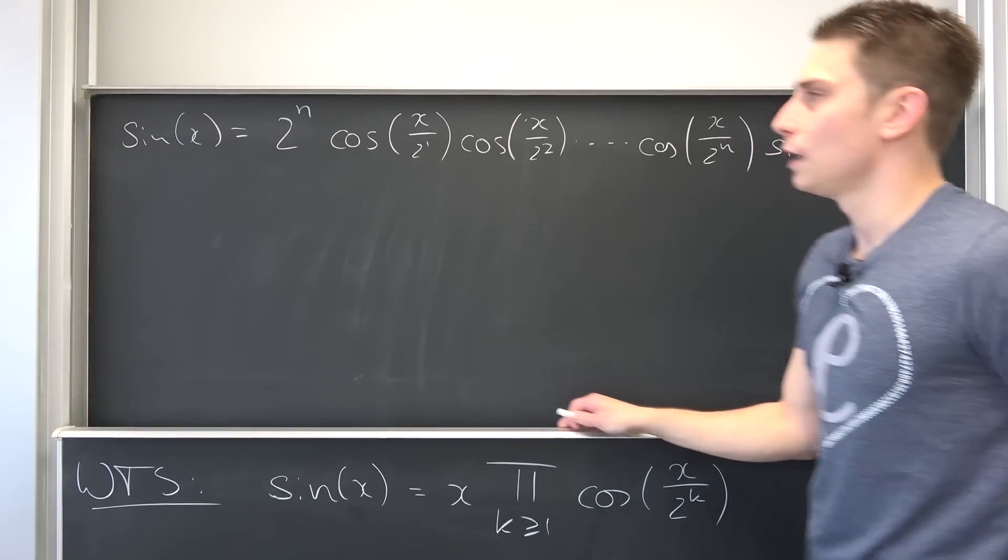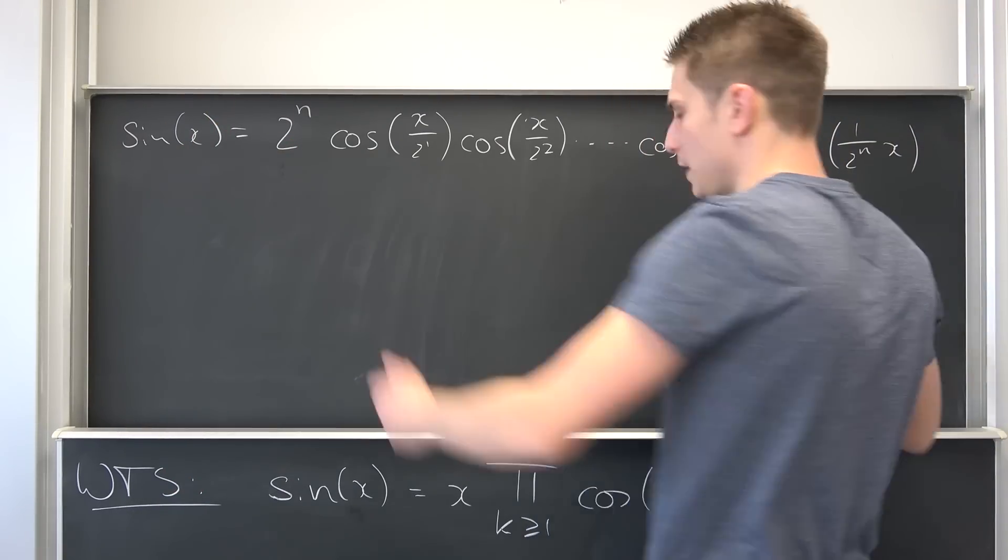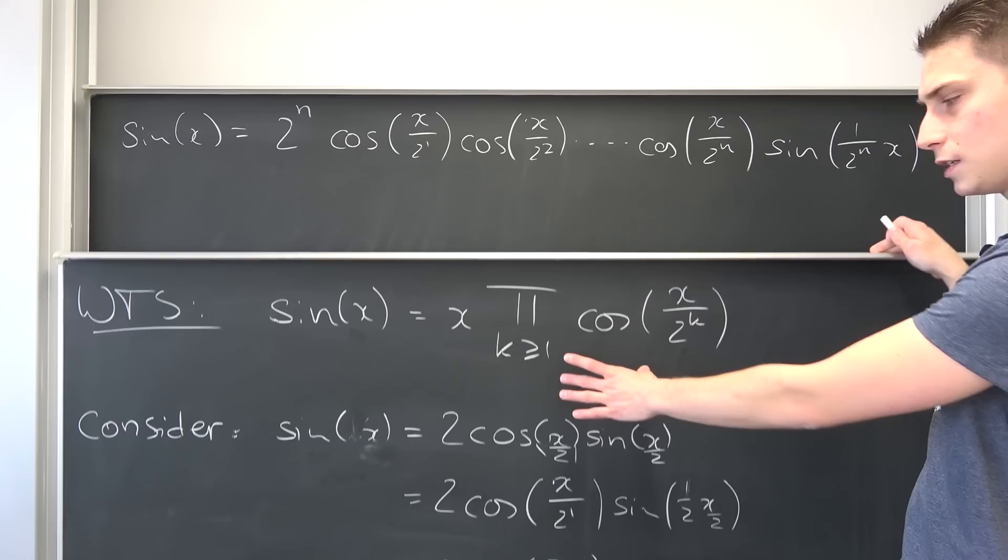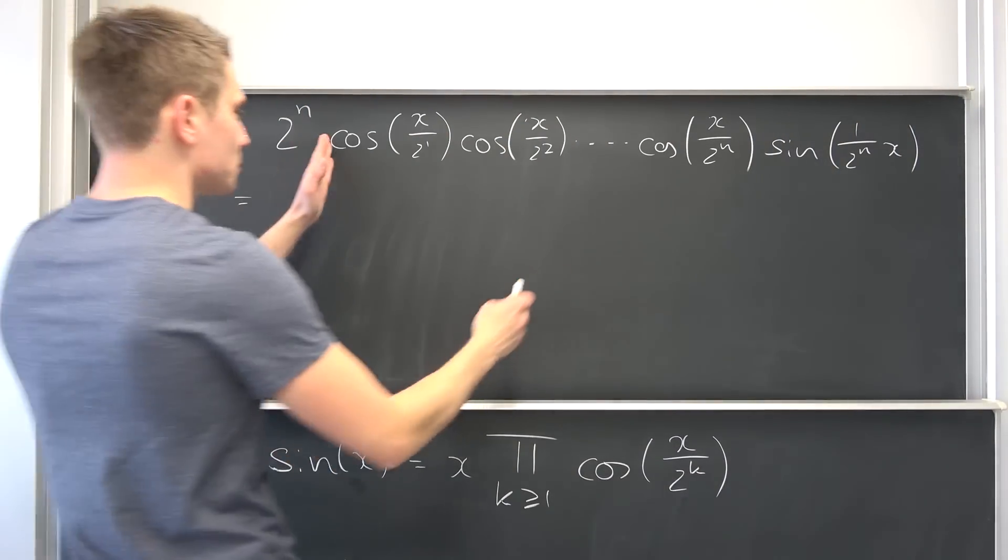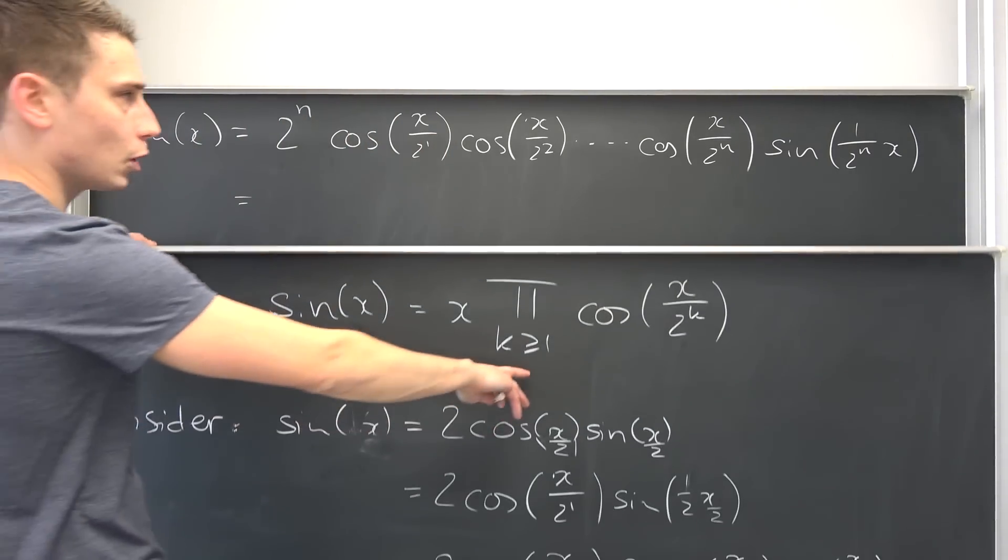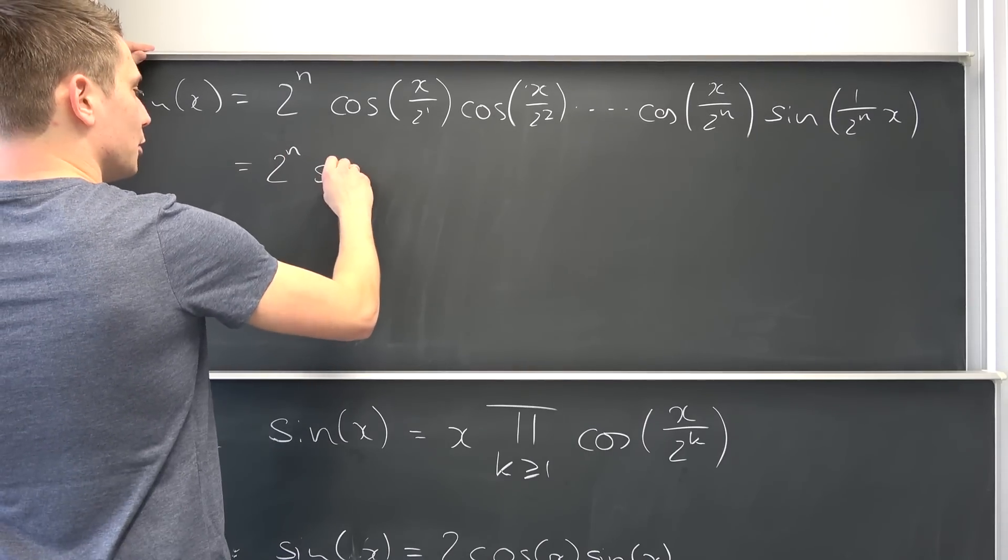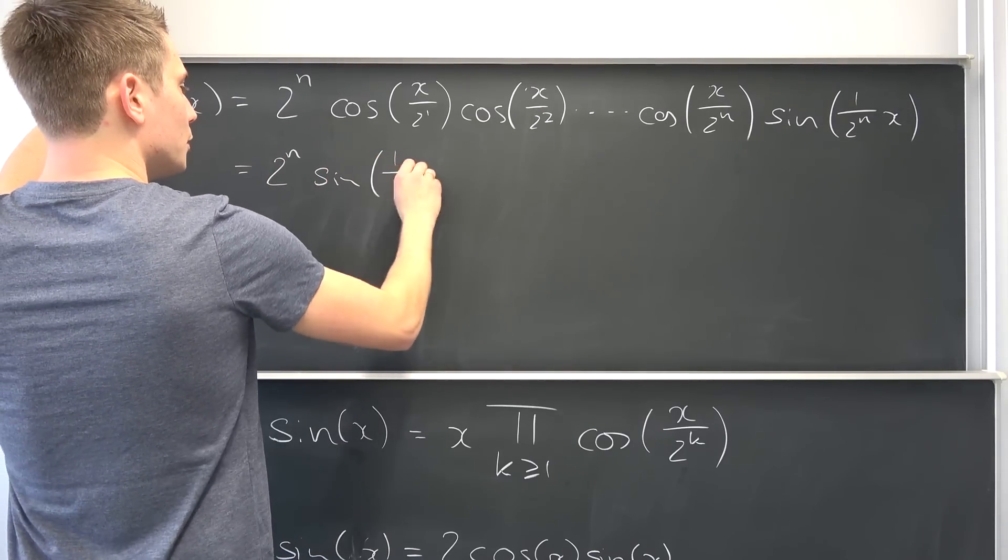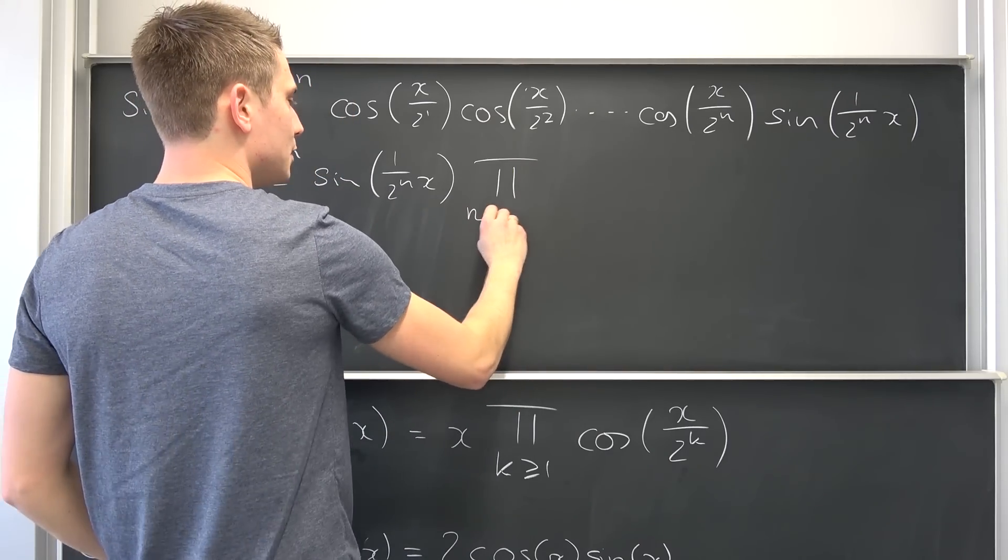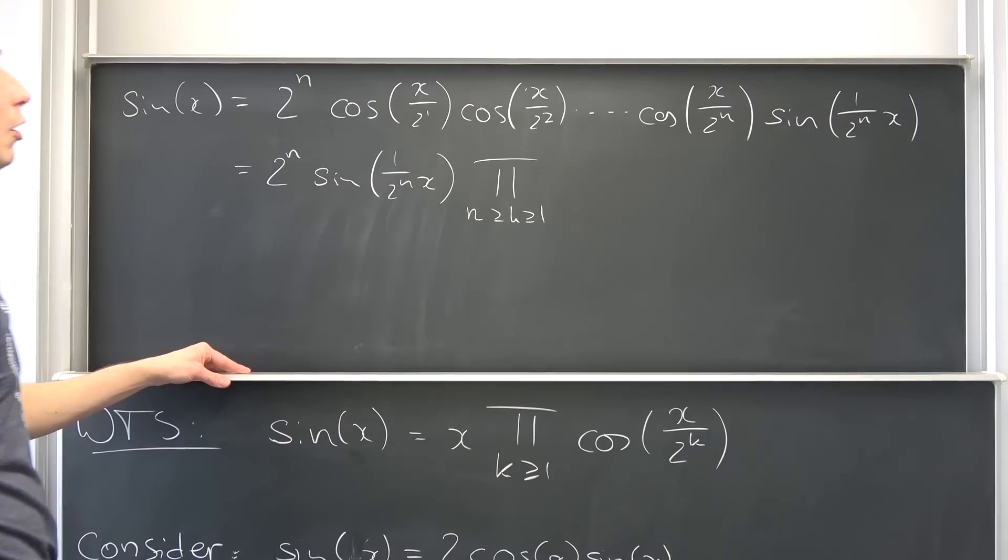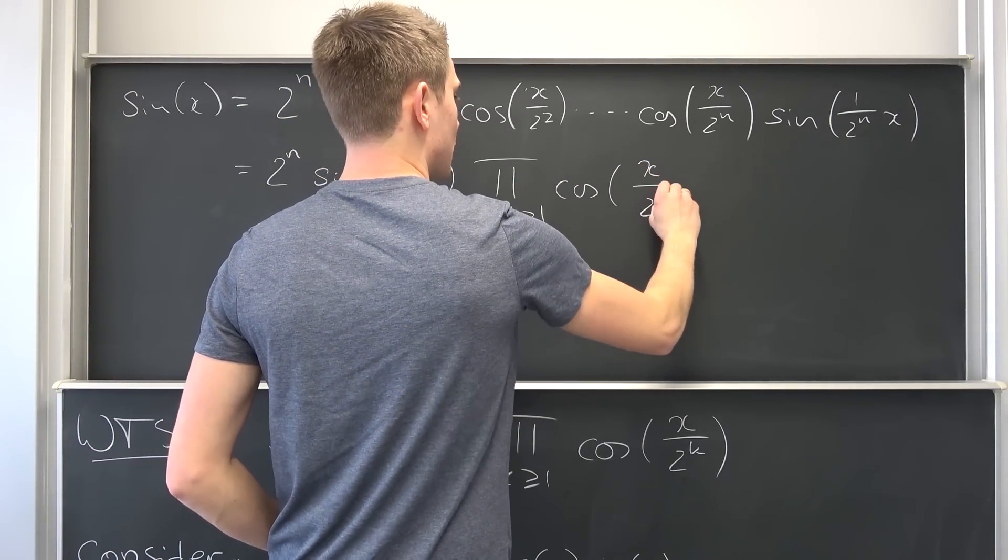Let us move on. This part that we have right here is basically this product that we are striving for, but it's only the partial product. This part right here is simply our partial product from 1 to n. So we are still going to have 2 to the nth power and then sine of 1 over 2 to the nth power times X, times our partial product where our K ranges from 1 to n of cosine X over 2 to the kth power.